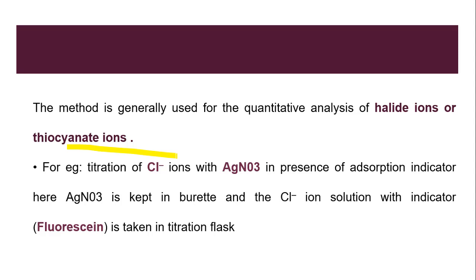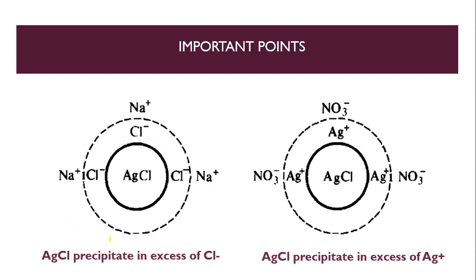For example, the titration of chloride with AgNO3: in a conical flask we take the chloride ion and titrate it with AgNO3, which is filled into the buret. We add the indicator — it's fluorescein. The indicator used is fluorescein, an adsorption indicator.